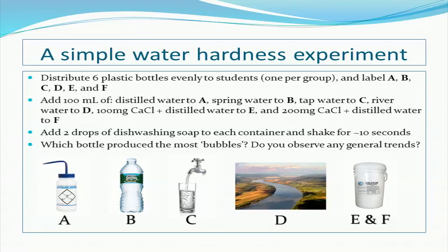Each group will add 100 milliliters of water and or chemical to their bottle as follows. Group A will add 100 milliliters of distilled water. B will add 100 milliliters of spring water. C will add 100 milliliters of tap water. D will add 100 milliliters of locally sourced river water. E will add 100 milligrams of calcium chloride to 100 milliliters of distilled water. For groups adding calcium chloride, swirl the bottle until all calcium chloride is dissolved.